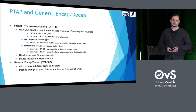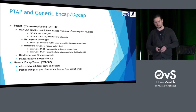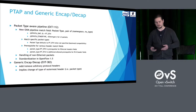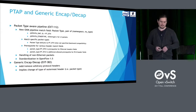It makes it possible to handle non-Ethernet frames in the pipeline, and it was standardized in the OpenFlow 1.5 specification. The generic encap/decap extension makes it possible to add and remove arbitrary protocol headers, and implies changing the type of the outermost header. At this point, the two extensions can be connected — once we have PTAP implemented, we can implement encap/decap in an easier way.